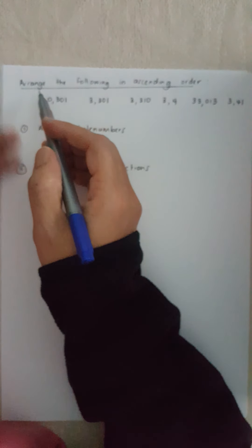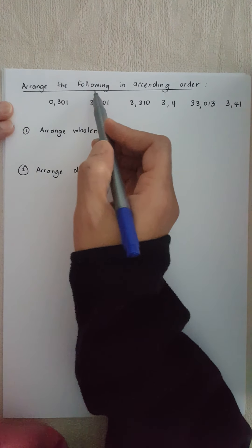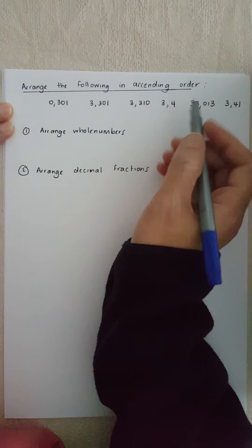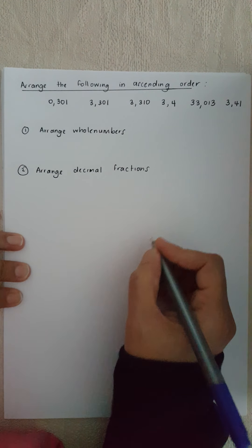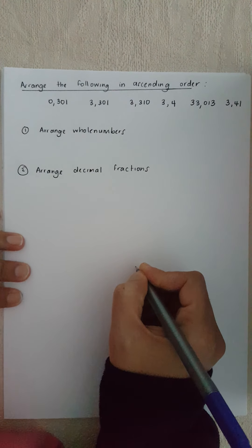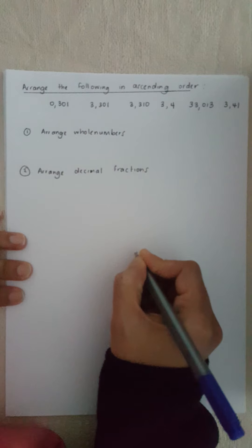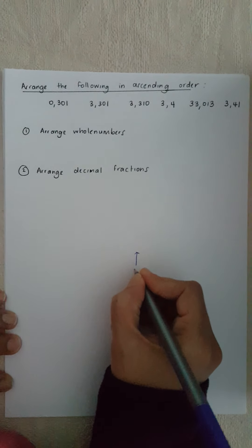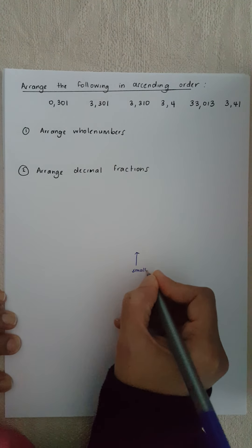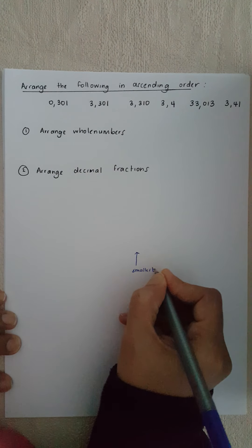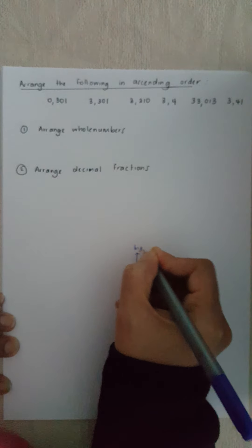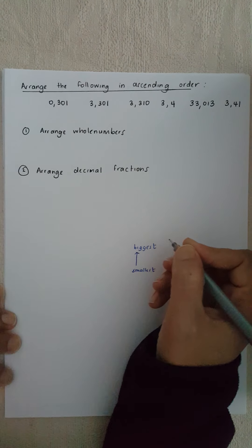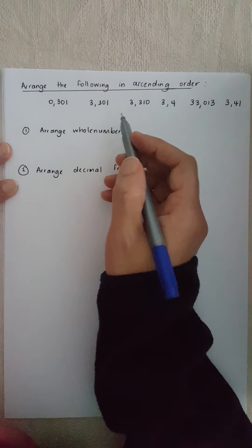The second question says arrange the following in ascending order. When we do ascending order we are going up, when we do descending order we're going down. So we're looking for the smallest number and we're going up to the biggest number. That's ascending order — now we understand the question.